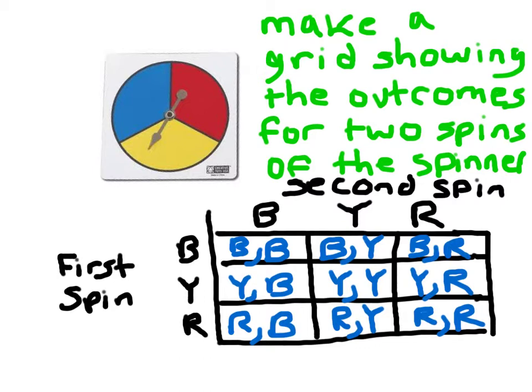Now, when we have a grid like this, you can also ask other questions. So for instance, you can ask, how many possible outcomes are there shown that have the same color for both of the spins? It would be this one, this one, and this one here. There's three of them.